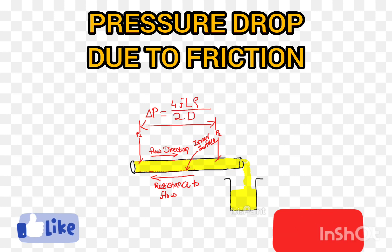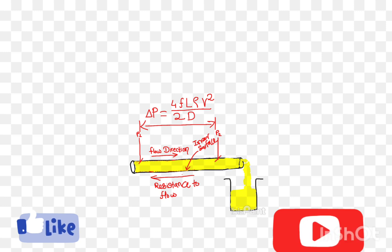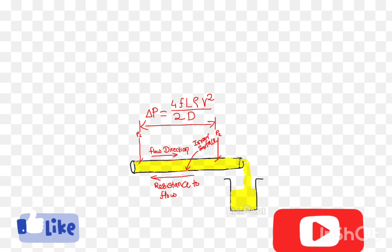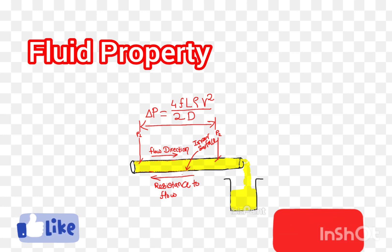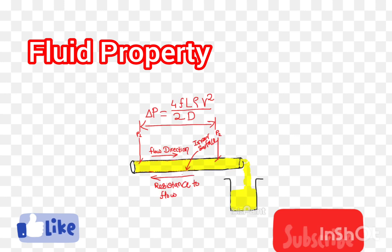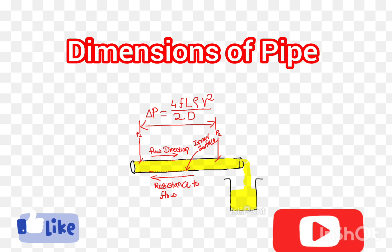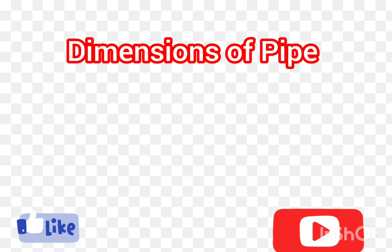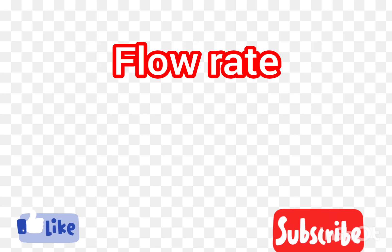To accurately calculate pressure drop due to friction in a pipe, we need to consider several key factors. The first is fluid properties — the dynamic viscosity and density of the fluid affect the level of friction experienced within the pipe. The second factor is pipe dimensions — the length and diameter of the pipe determine how much resistance the fluid encounters as it flows.